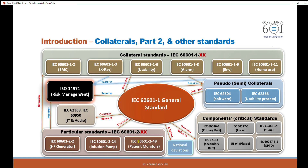The other very important standard is the application of risk management to medical devices, which is ISO 14971, and the national deviations — basically additional requirements based on national requirements such as US, Canada, Australia, Brazil, Japan, and so on. There are also some group divisions, like the EU group differences, so some requirements are applicable only for the EU. Those deviations are just additional.